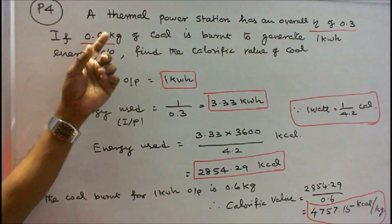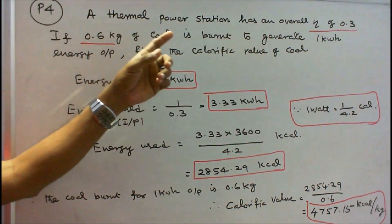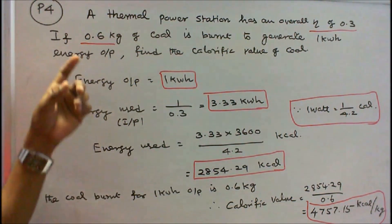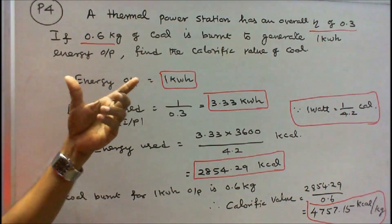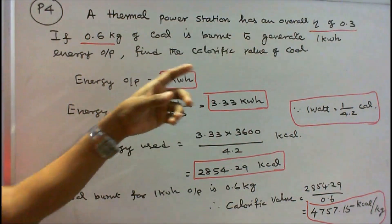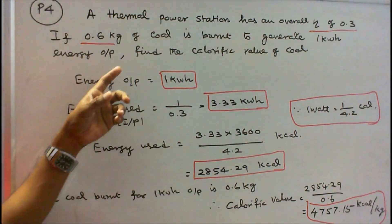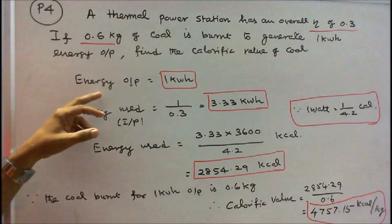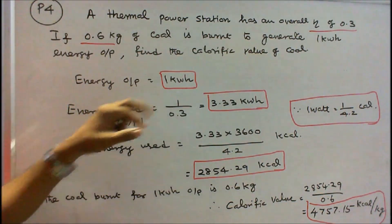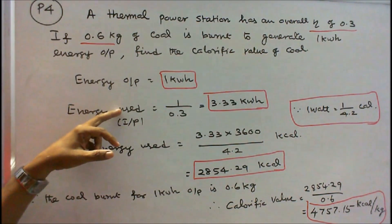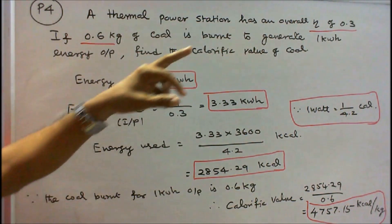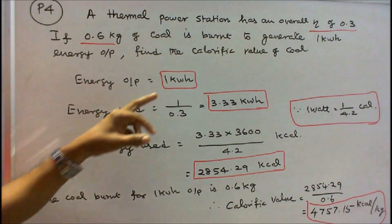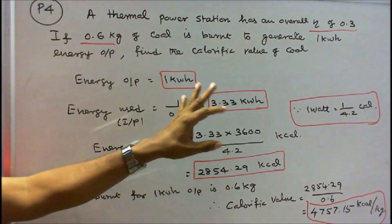Problem number 4: a thermal power station has an overall efficiency of 0.3. If 0.6 kg of coal is burnt to generate 1 kilowatt-hour energy output, find the calorific value of coal. Energy output = 1 kilowatt-hour. Energy used = energy output ÷ station efficiency = 1 ÷ 0.3 = 3.33 kilowatt-hours.